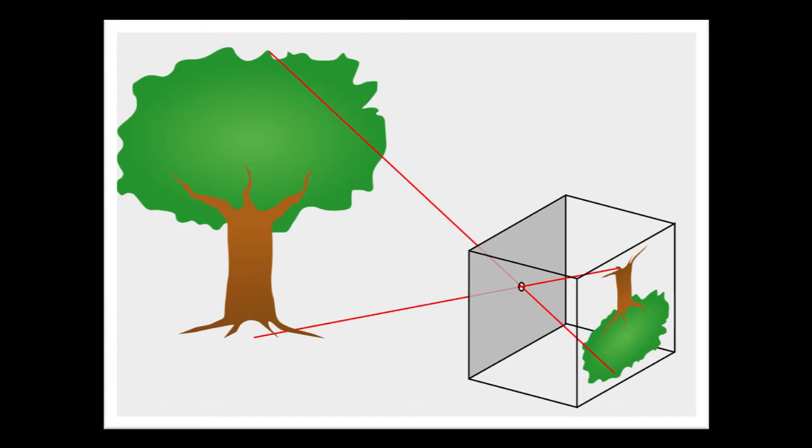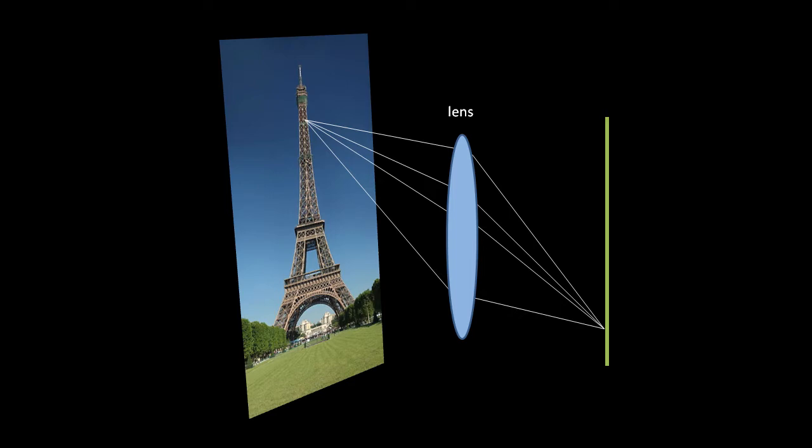Most practical cameras use a lens made up of one or more elements of glass, shaped such that all light rays from one point in the scene get refracted to the proper point on the film. Like in a pinhole camera, the scene gets flipped vertically and horizontally, but that isn't a big deal because we can just flip the film or digital image when we display it.